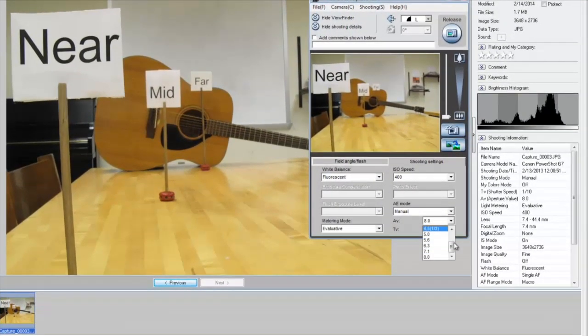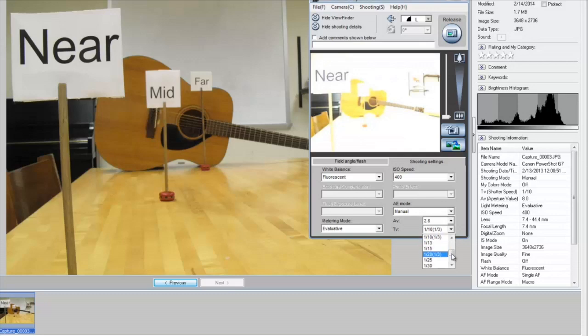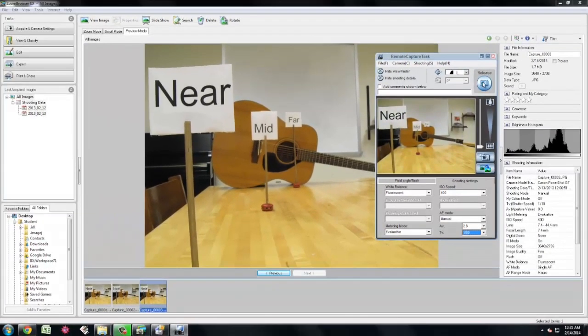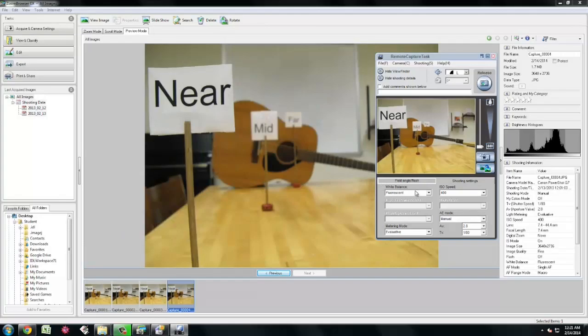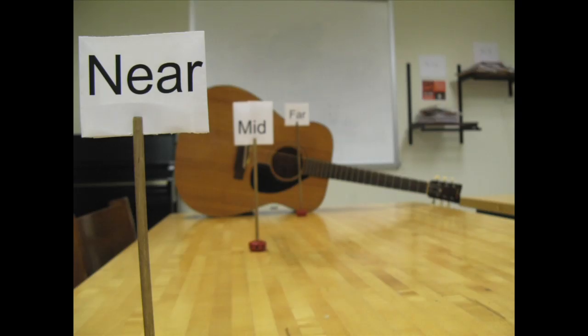Then change the aperture to 2.8 and exposure to 1 by 80 and take another photograph. You will observe that the photograph with smaller aperture has larger depth of field as compared to the photograph with bigger aperture.